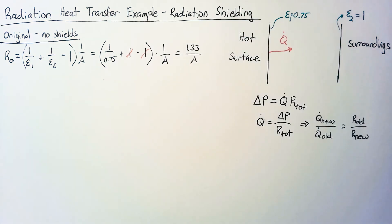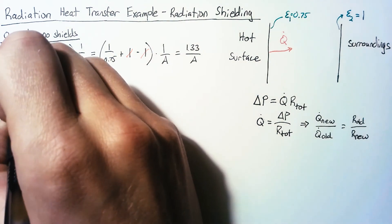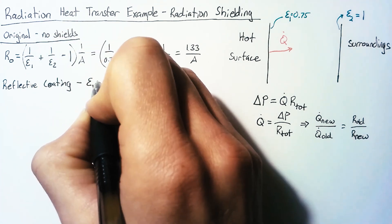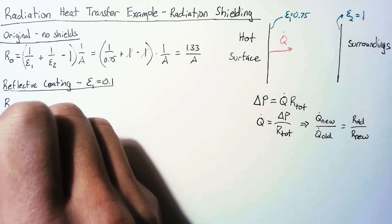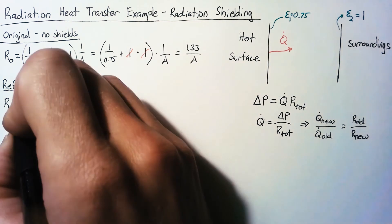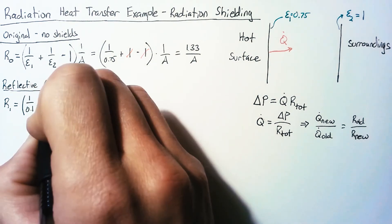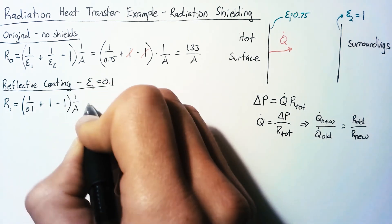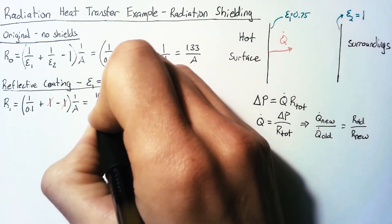For our first try at reducing the heat flow, we're going to apply a reflective coating on our hot surface. This case is the same as the original except that our epsilon 1 is now equal to 0.1. So our new resistance R1 is (1/0.1 + 1/1 − 1) × (1/A). The ones cancel again, giving a resistance of 10/A.